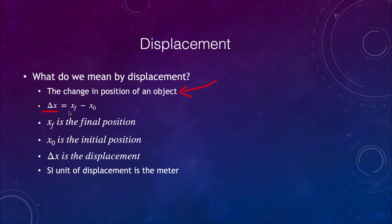And we define that here as Δx or the change in position is equal to the final position minus the initial position. So x with the subscript f is the final position, x with the subscript 0 is the initial position, and Δx is the displacement. And the unit we use for that is the meter.